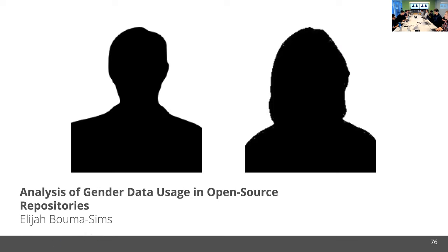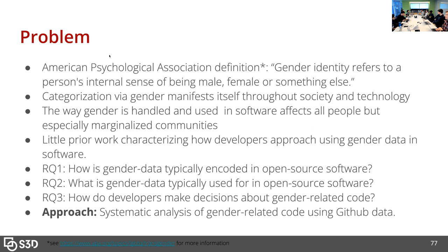Hello, I'm Elijah, as you already know hopefully. Today we'll be presenting on a project looking at the uses of gender data on GitHub. Just to go over the problem, gender is defined as someone's inherent sense of being male, female, or something else by the American Psychological Association. It's a good, simple working definition.